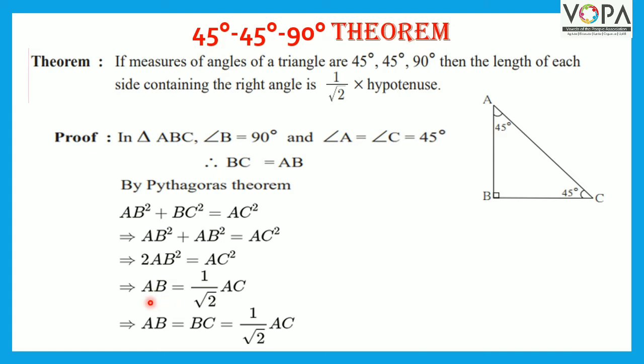Therefore, AB is equal to 1 upon root 2 into AC, taking square root on both sides. And therefore, AB is equal to BC is equal to 1 upon root 2 into AC.